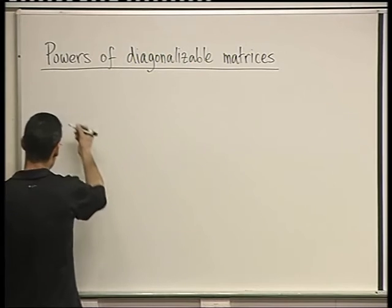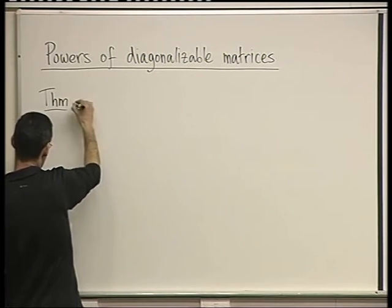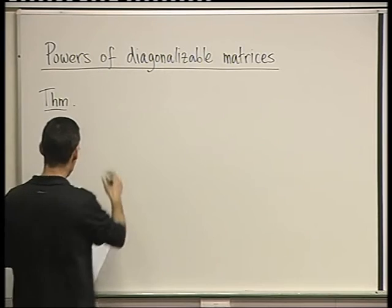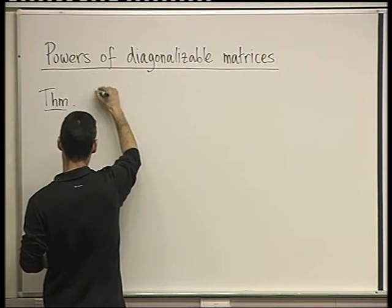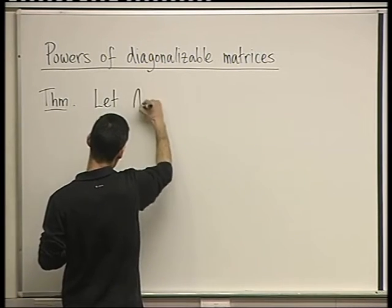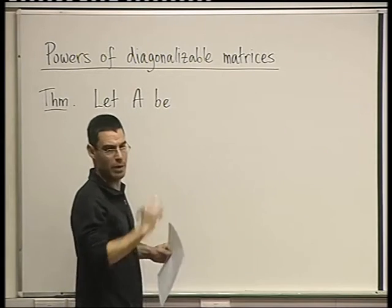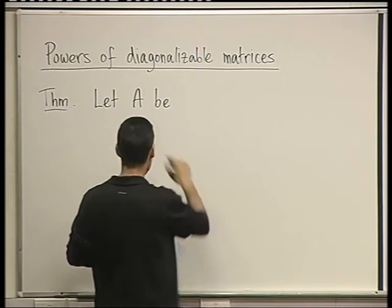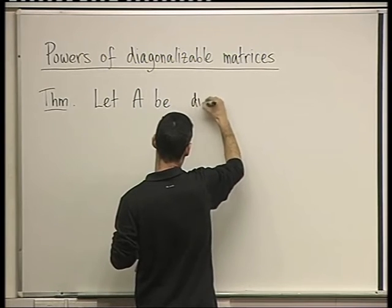So let's start with the theorem, just stating it, and then we'll understand what the motivation is. So let A be diagonalizable, suppose that it is, and we know how to determine if it is.